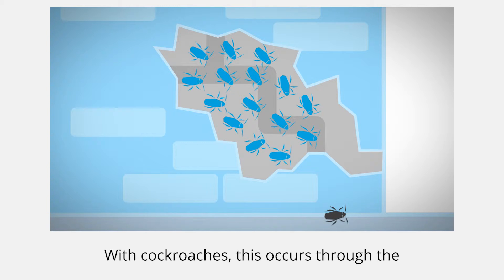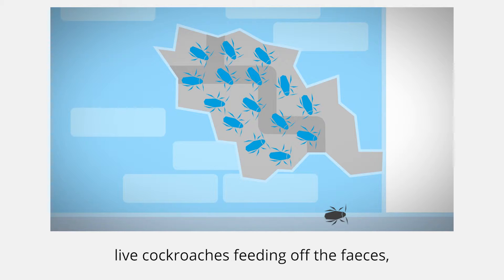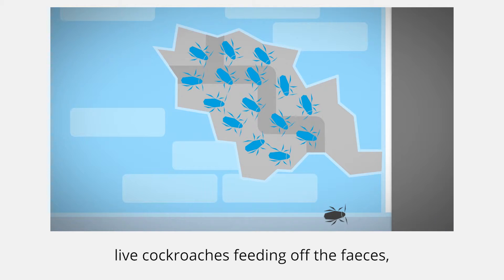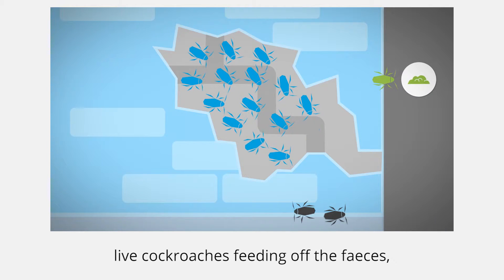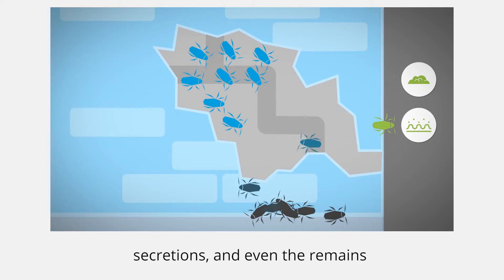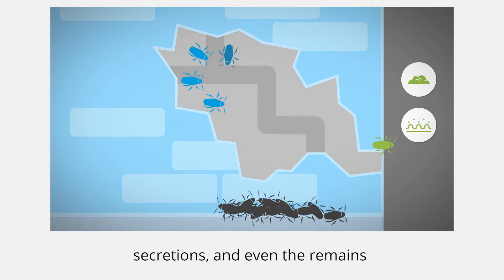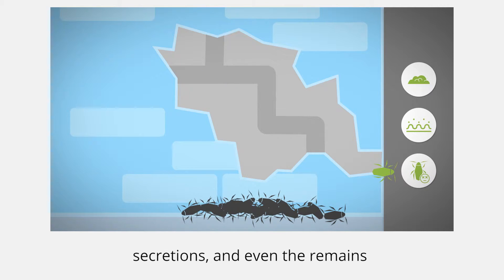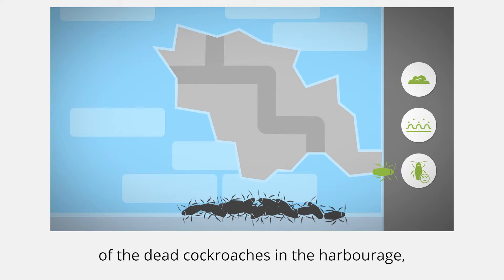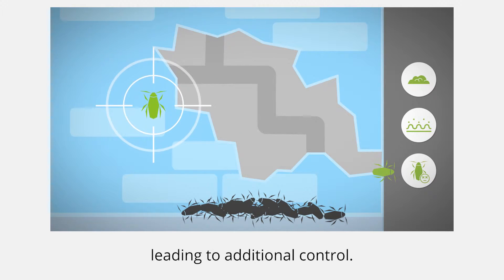With cockroaches, this occurs through the live cockroaches feeding off the feces, secretions, and even the remains of the dead cockroaches in the harbourage, leading to additional control.